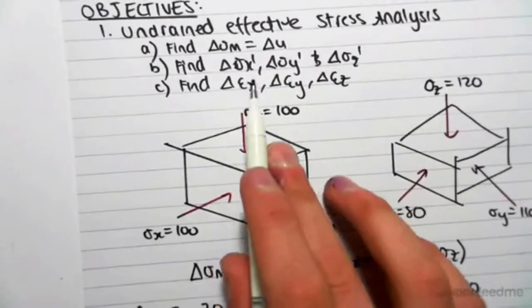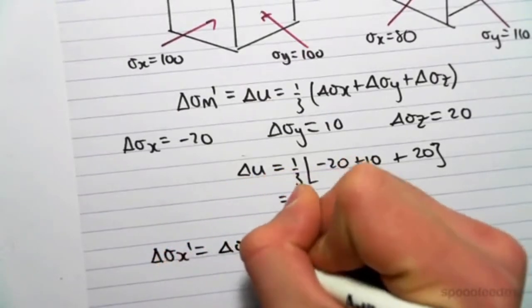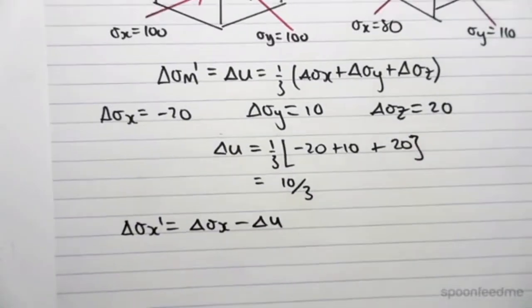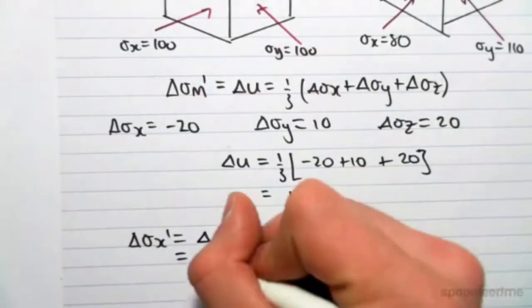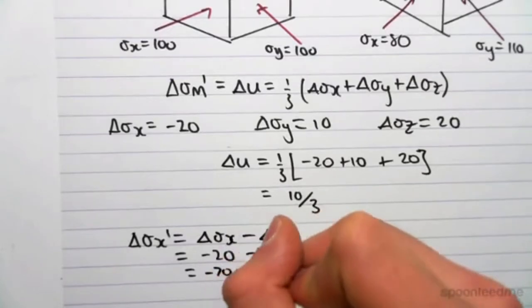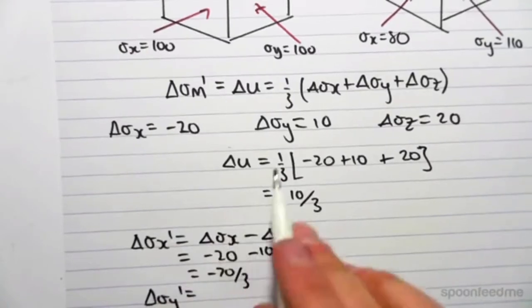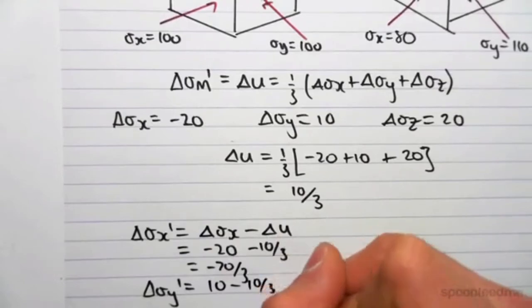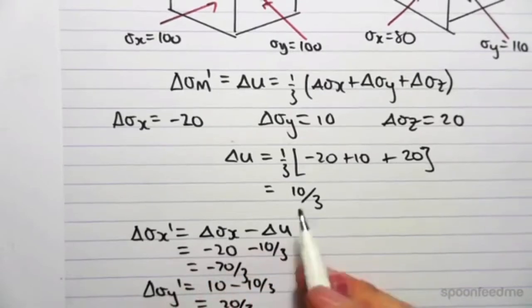Now we can find the change in effective stress, because effective stress equals total stress minus pore water pressure — with change applied to all values. So the change in effective stress in x equals minus 20 minus 10/3, giving minus 70/3. The change in effective stress in y equals 10 minus 10/3, giving 20/3. And the change in effective stress in z equals 20 minus 10/3, giving 50/3.